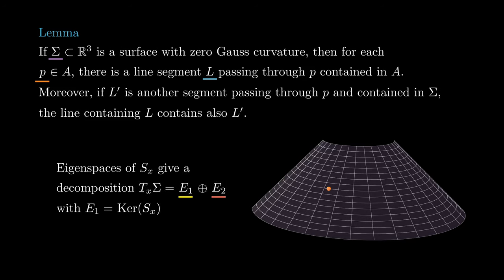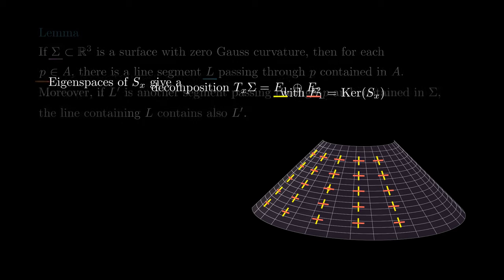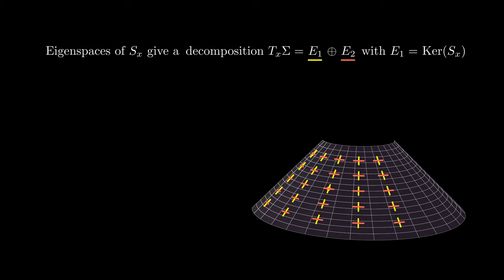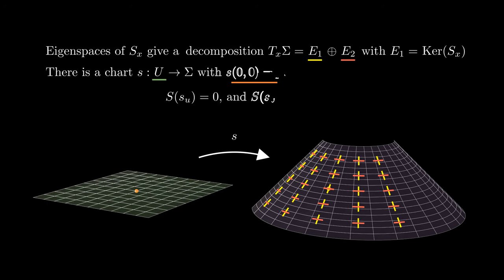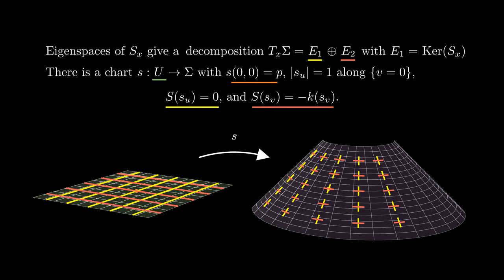The corresponding eigenspaces give an orthogonal decomposition of Tx sigma that changes smoothly from point to point. This allows one to construct the chart S with S of zero equals P, Su in the kernel of S, and Sv in the other eigenspace. Also, we can arrange that Su has norm 1 along the axis v equals zero. The construction of this chart is a consequence of the general existence theory of ODEs and it leaves the u as an exercise.